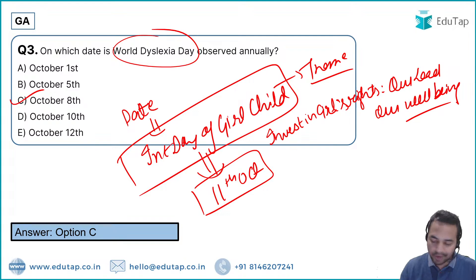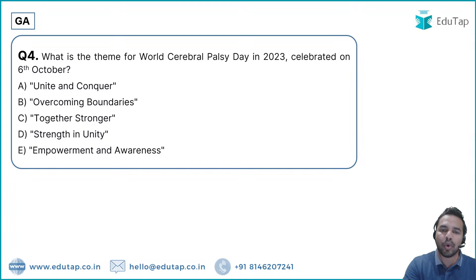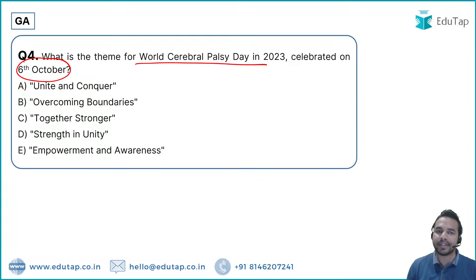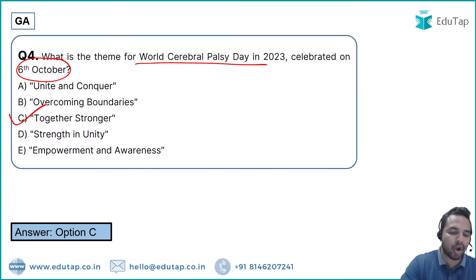Question 5: What is the theme of World Cerebral Palsy Day 2023? It is celebrated on 6th October. The theme for World Cerebral Palsy Day 2023 is 'Together Stronger' — Option C is the right answer.